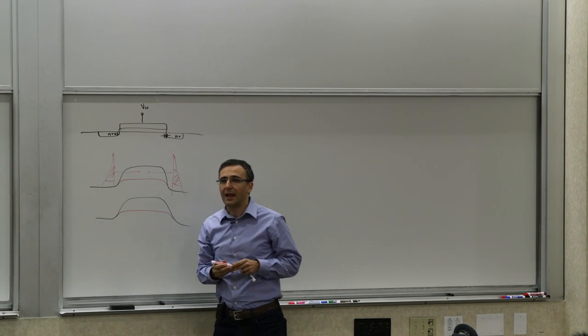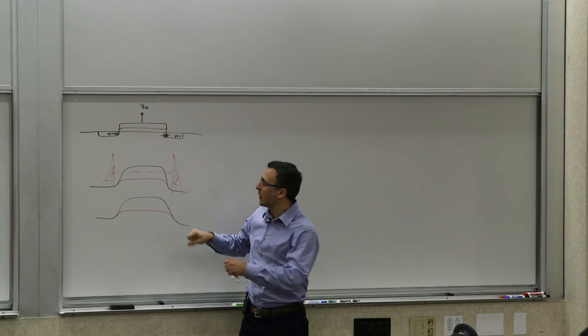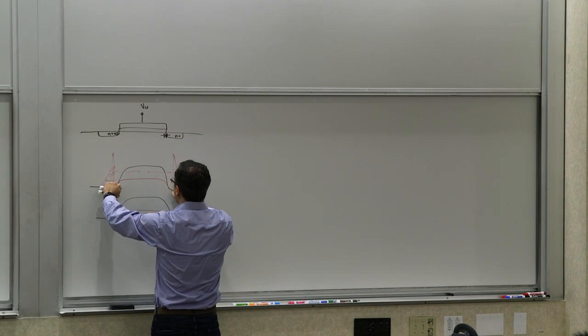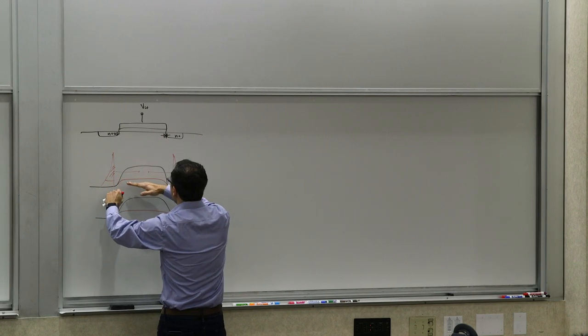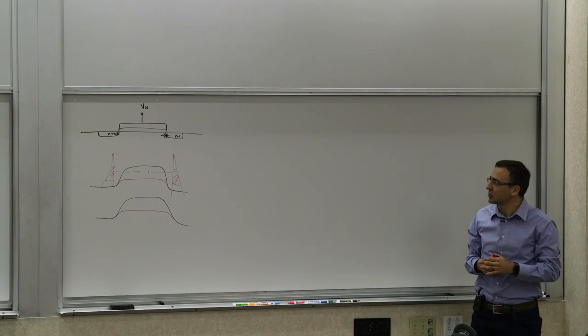So you form a channel that can conduct current. And then if you apply an electric potential across the channel, you're moving this down, so the electrons can start flowing from the source to the drain. That's the basic picture.